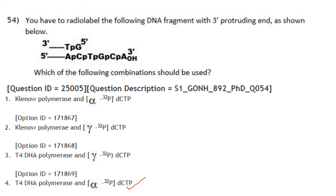To radiolabel a DNA fragment with a 3′ protruding end, the combination used would be T4 DNA polymerase and alpha-P32 dCTP. Answer is option 4.